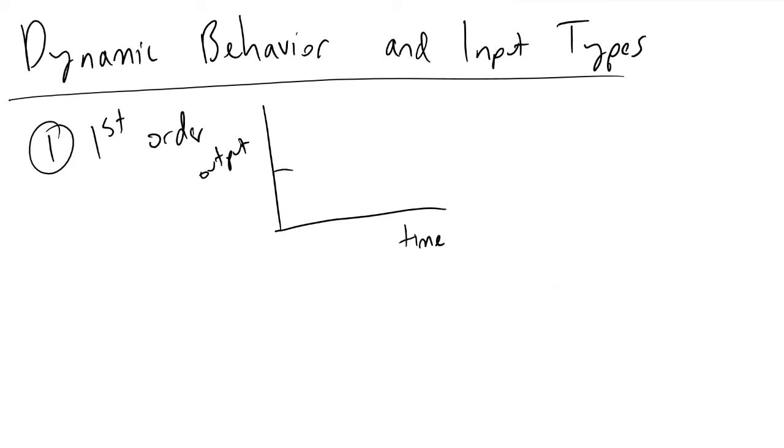When we are looking at a first order system, we'll typically see dynamics that look like this. We'll have nothing until our step change occurs at some time, and then we will realize some kind of change in our output. We've reached some kind of new steady state value. This was our initial steady state value and we have deviated from it, but we have reached a new steady state value.